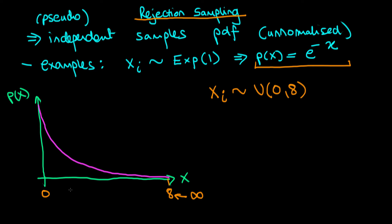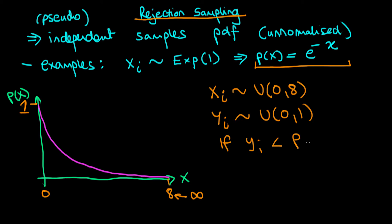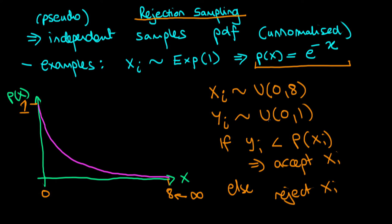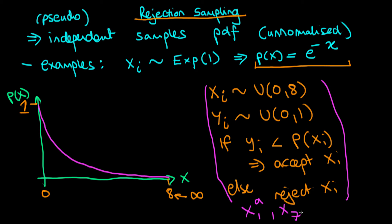We generate an x value between zero and eight, then generate a y value which is uniformly distributed between zero and one — that's the range of the function. The routine is: if the y value we generate is less than the PDF evaluated at that x value, we accept xi as a sample from our distribution; otherwise we reject xi. We run this routine a large number of times, and the accepted x values form our sample — for example, we might accept the first draw, then the seventh, and so on.